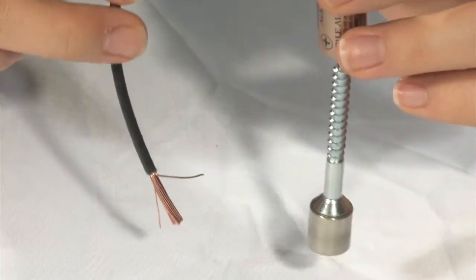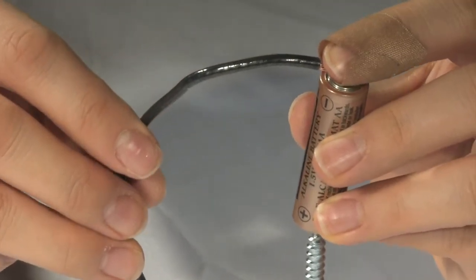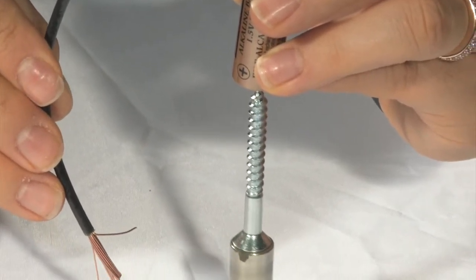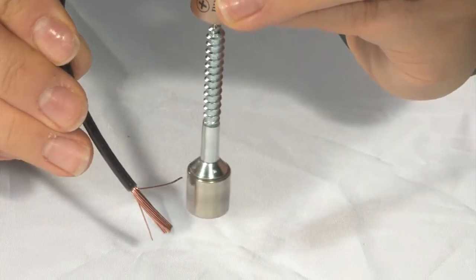Now you touch one end of the wire to the negative battery terminal. Hold it there. And then this is where the magic begins. Touch the other end of the wire to the magnet.